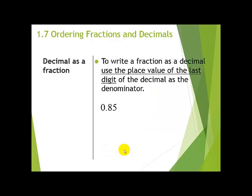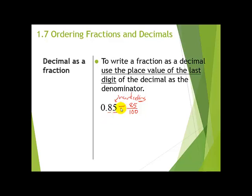Now we've taken fractions to decimals; now we take decimals to fractions. To write a decimal as a fraction, use the place value of the last digit as the denominator. For example, 0.85: the last digit 5 is in the hundredths place, so the denominator is 100 and the numerator is 85. So 0.85 equals 85/100. For 0.4: the last digit is in the tenths place, so the denominator is 10, giving 4/10, which reduces to 2/5.